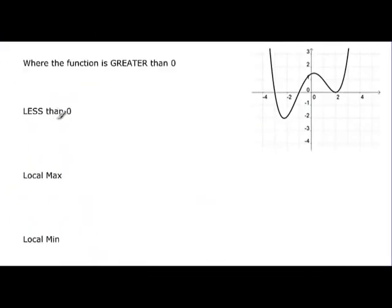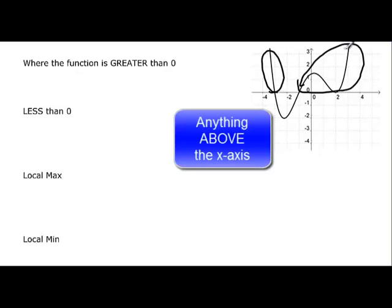One last bit that we're going to do here. Where is the function greater than 0? Now it's greater than 0 right here, and right all of this. Okay, and remember that these are arrows on these graphs.